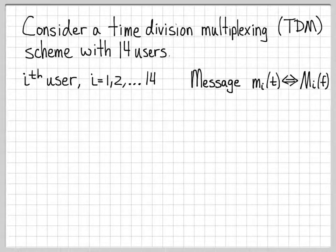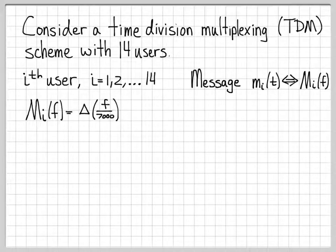So user 1 sends signal m1(t), user 2 sends signal m2(t). That's the time domain representation of the signal they're wanting to transmit. In the frequency domain, we call that capital M_i(f). So we have M1(f), M2(f). Those are the Fourier transforms or the frequency domain representation of these signals. And we're going to assume that all of these signals are essentially the same. In the frequency domain, they're a triangle function with a total width of 7,000. So even though they're all different users, for the sake of this problem, we'll assume that their spectrums are all the same.